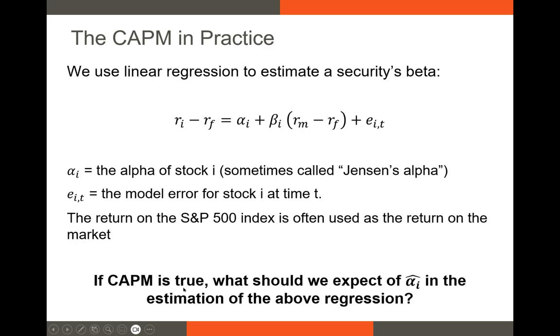One final point, this is a very easy testable question. If the CAPM was true and perfectly predicted stock returns, what should we expect of our alpha in the estimation here? Well, if the CAPM perfectly predicted stock returns, alpha would be zero because we wouldn't be underperforming and we wouldn't be outperforming.